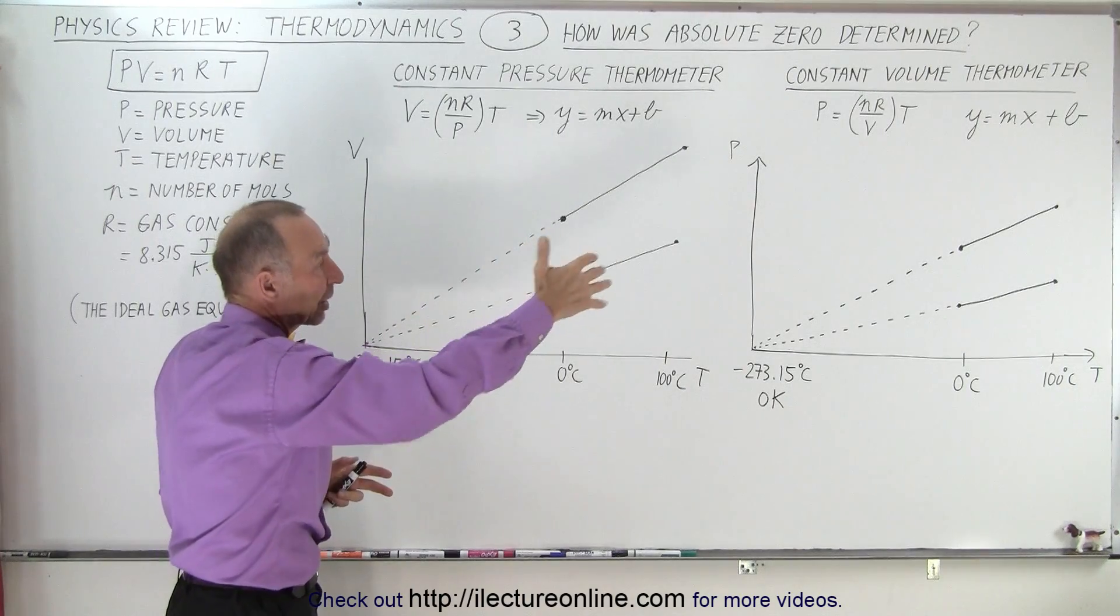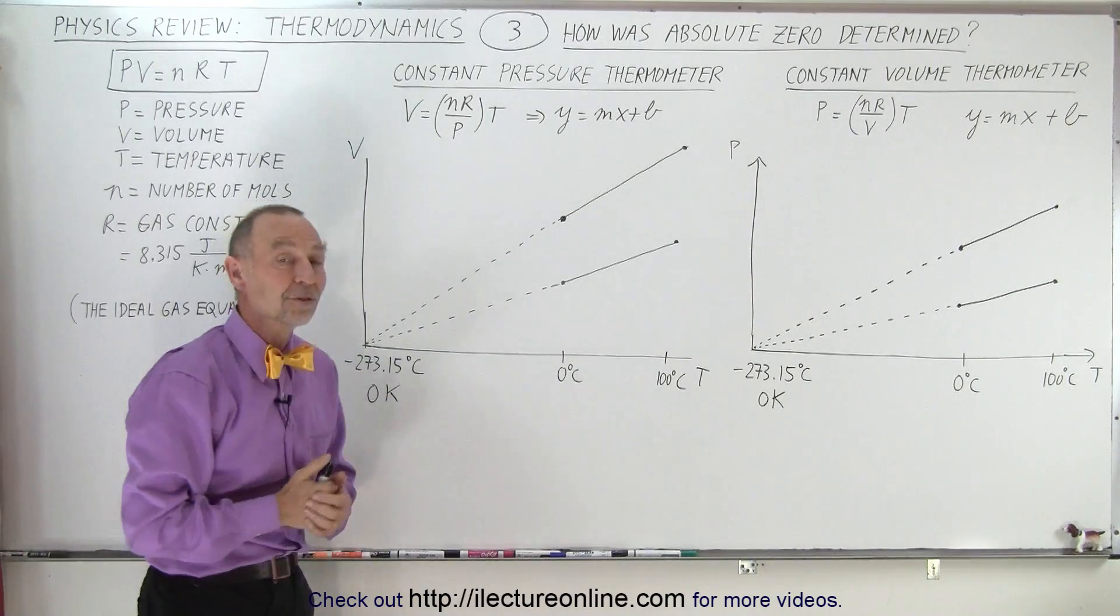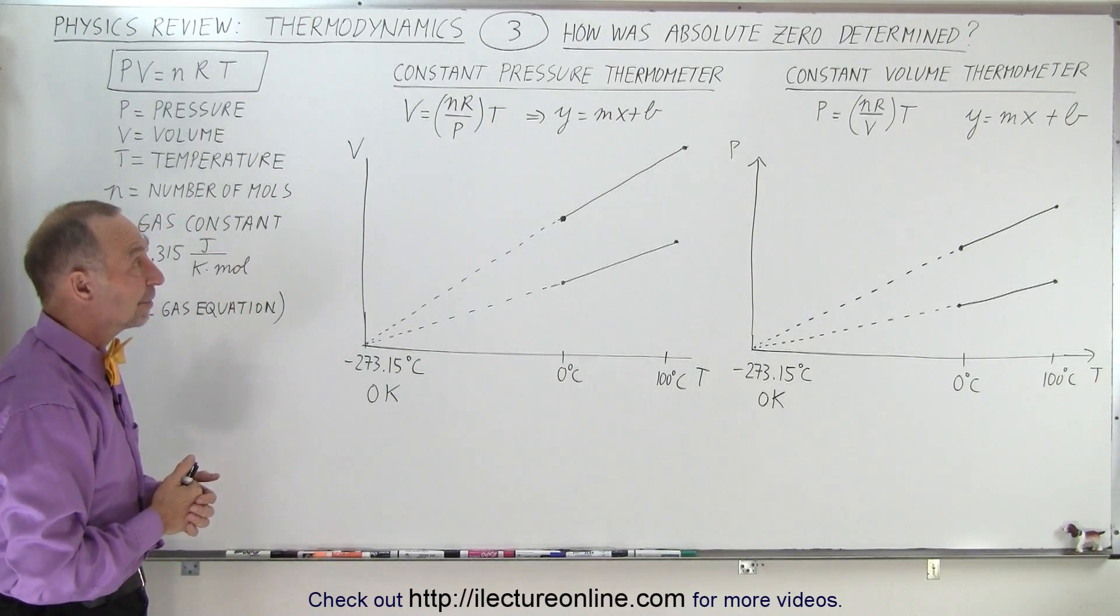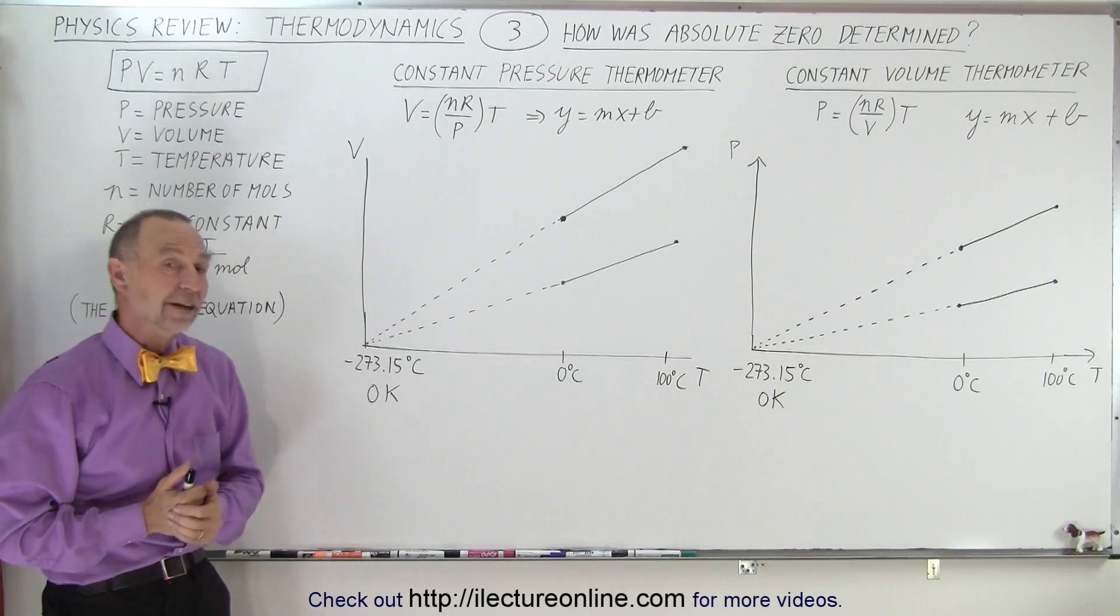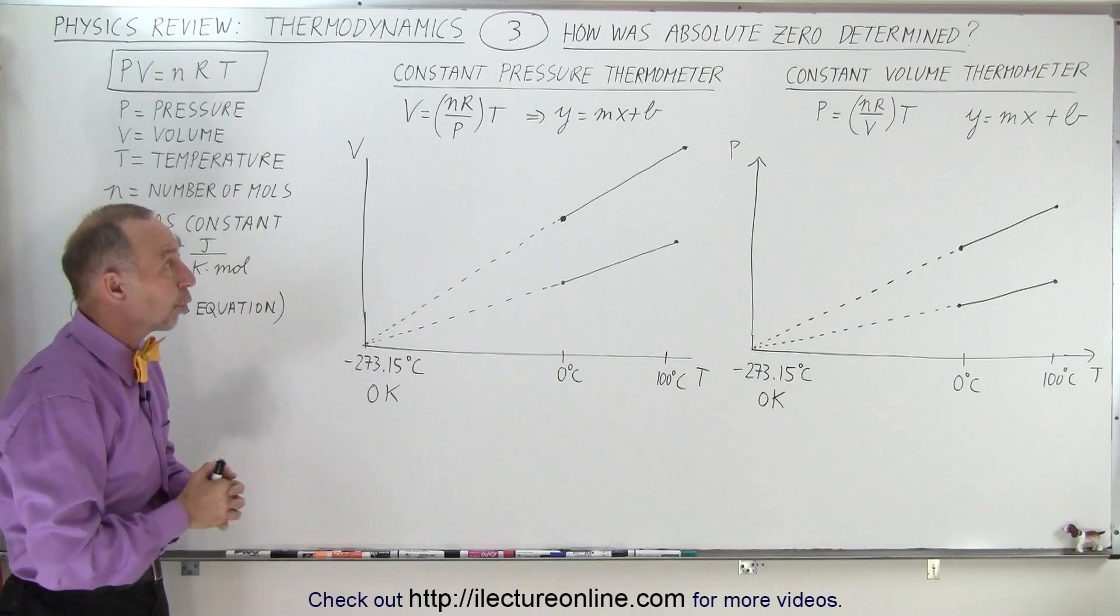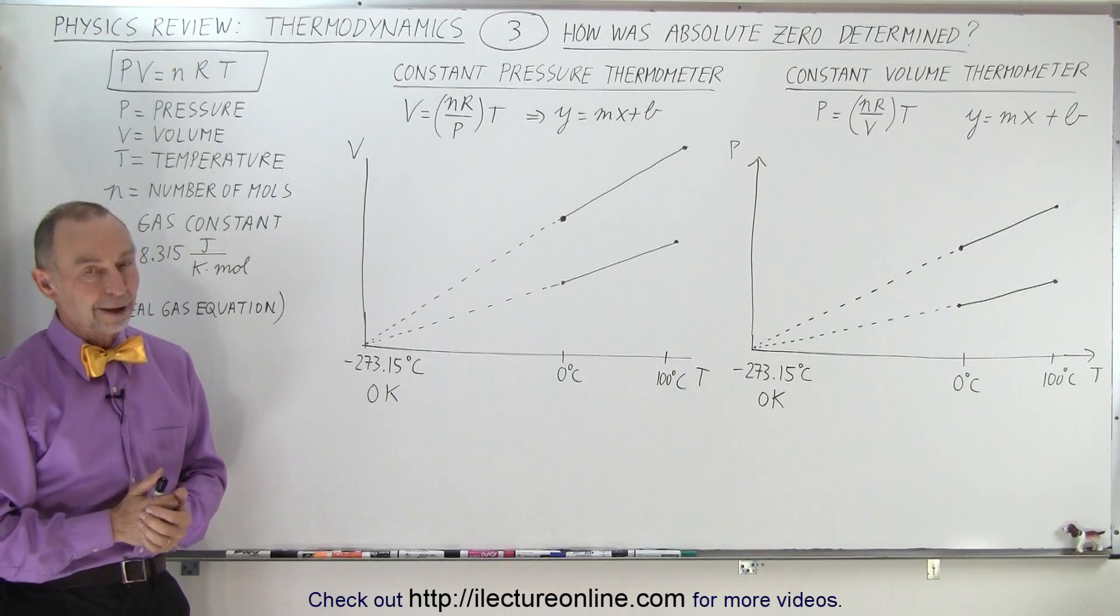But if you just simply extrapolate out those lines, you'll find that that is how absolute zero was determined. Very clever, the use of the ideal gas equation and these two nifty devices where the volume is kept constant or the pressure is kept constant, and that's how we determine absolute zero.